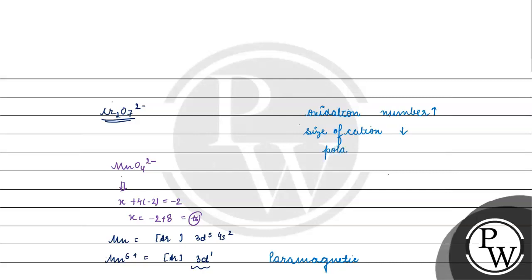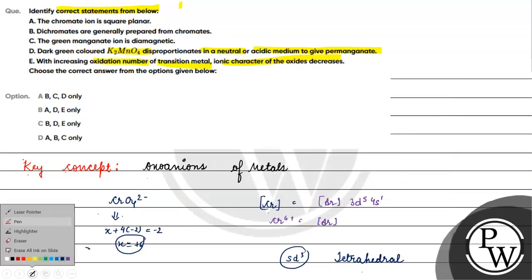If the size of the cation decreases, its polarizing power increases - the power to pull the electron cloud toward itself increases. According to Fajans rule, the smaller the cation, the higher its polarizing power. Higher polarizing power means better overlapping between the cation and anion's electron clouds, so covalent character increases, not ionic character. As polarizing power increases, covalent character increases. The ionic character of the oxides will decrease. Option E is correct.